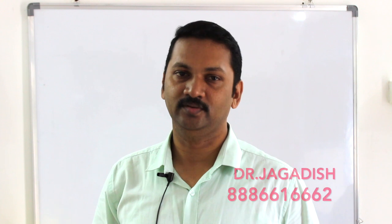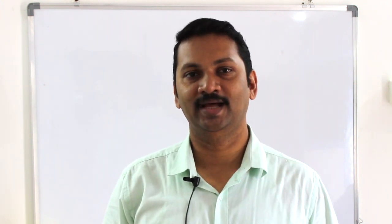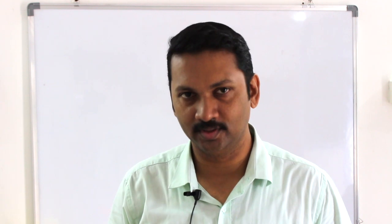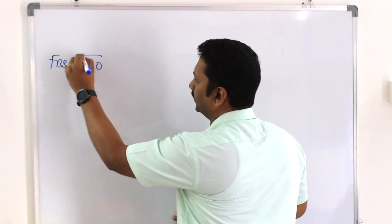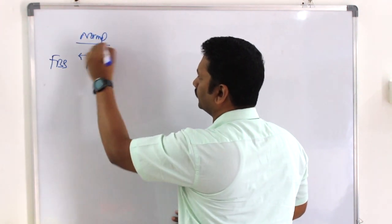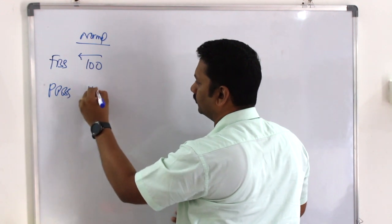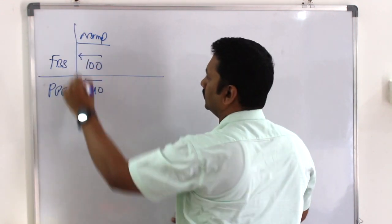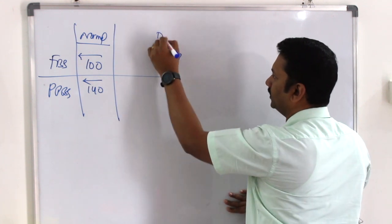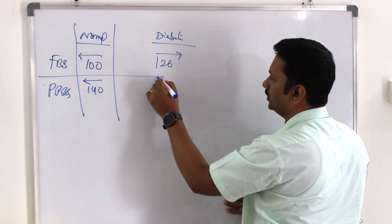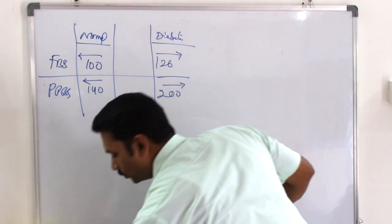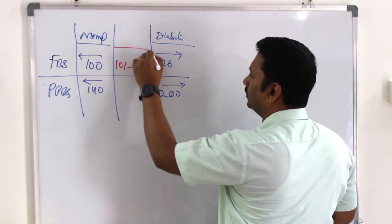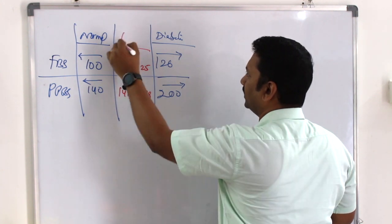Today's topic is diabetes — diabetes and blood sugar. Fasting blood sugar below 100 is normal. Post-prandial below 140 is normal. Fasting 126 and above is diabetic, and random blood sugar 200 and above is called diabetic. The range of 101 to 125 fasting and 141 to 199 post-prandial is the pre-diabetic group.